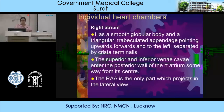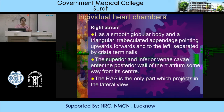Coming to the individual heart chambers. The right atrium has a smooth globular body and a triangular trabecular appendage pointing upwards, forwards and to the left, separated by the Crista terminalis. The superior and inferior venae cavae enter the posterior wall of the right atrium some way from its center. The right atrial appendage is the only part which projects in the lateral wall.